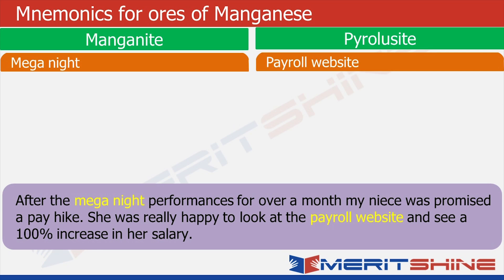Now that we have the story in our mind and have associated the words with the names of ores, let us recall them. Mega night should help us recall manganite, and payroll website should remind us of pyrolusite. With this we can move to the ores of calcium.